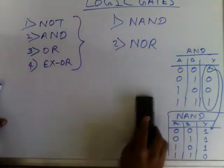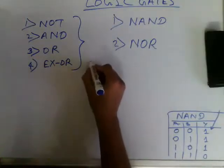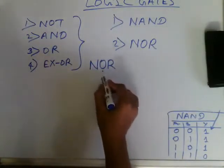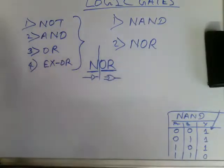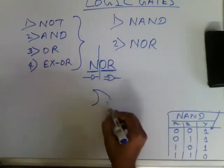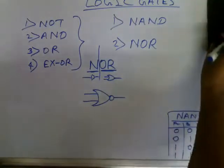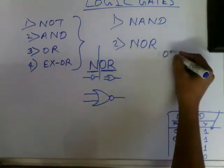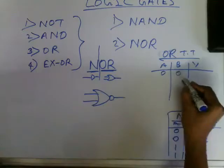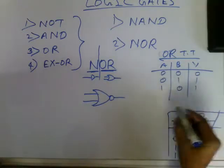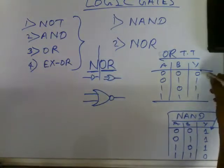Now we will see the NOR gate. The NOR gate is a combination of OR gate and NOT gate. The diagrammatic representation is just like an OR gate with a bubble in front. The truth table of OR gate is: A B Y — 0 0 gives 0, 0 1 gives 1, 1 0 gives 1, 1 1 gives 1. The NOR gate output is just the reverse of the OR gate output.